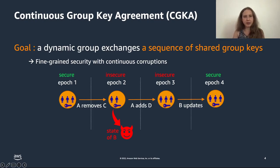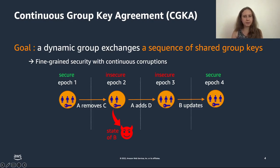To summarize, CGKA is the core primitive for secure group communication. Many applications will bootstrap their security properties from the security properties of the shared group key — it will be used to encrypt messages, video streams, authenticate members, etc. And this is why we look at CGKA in this work.